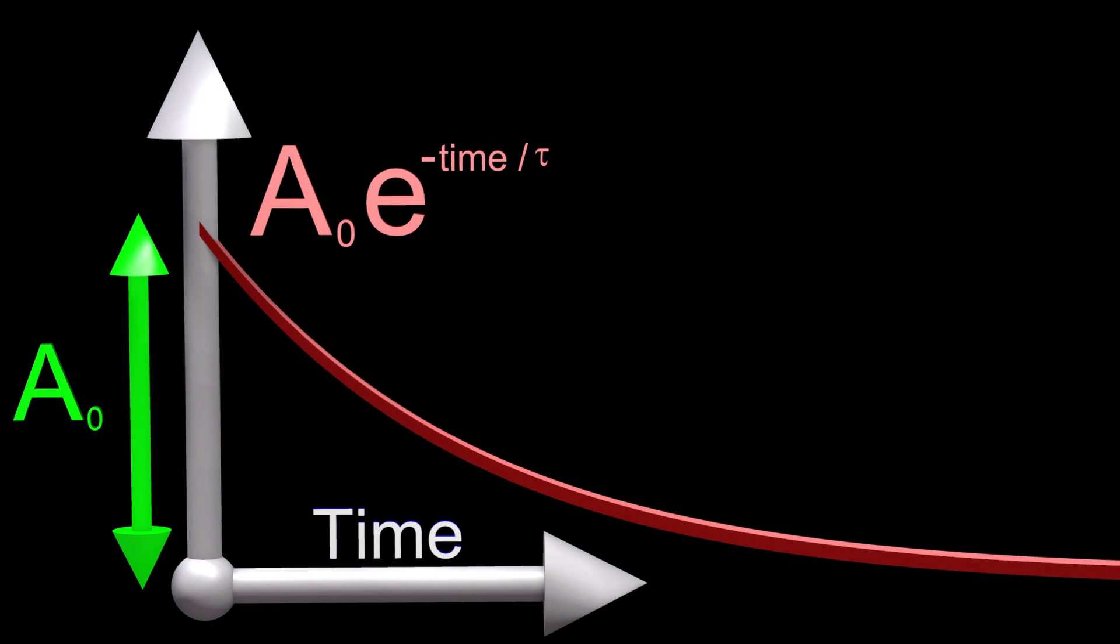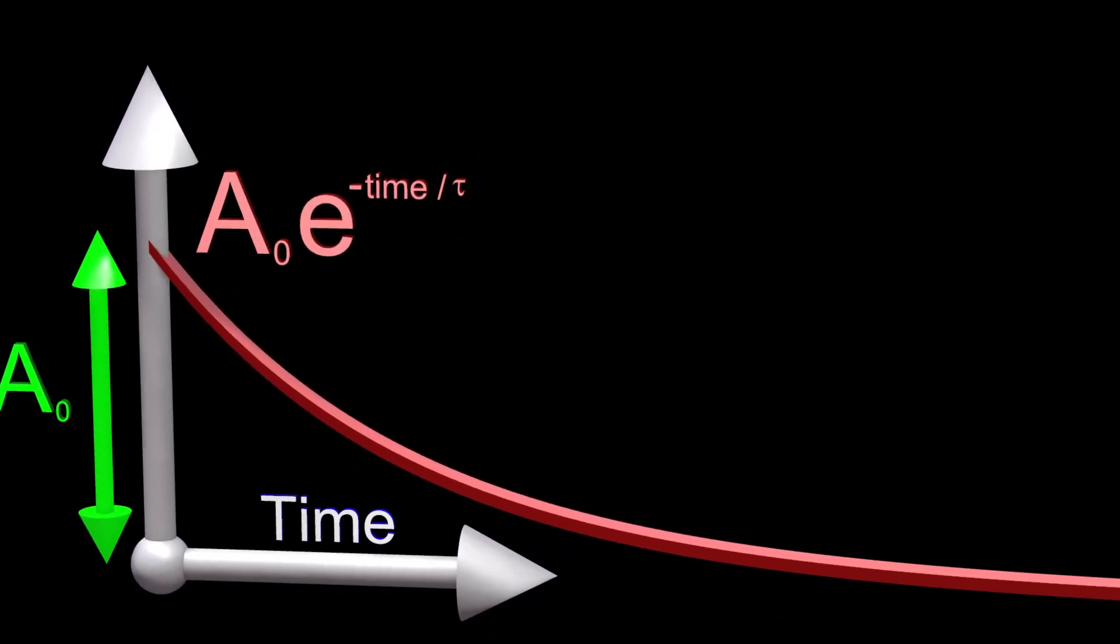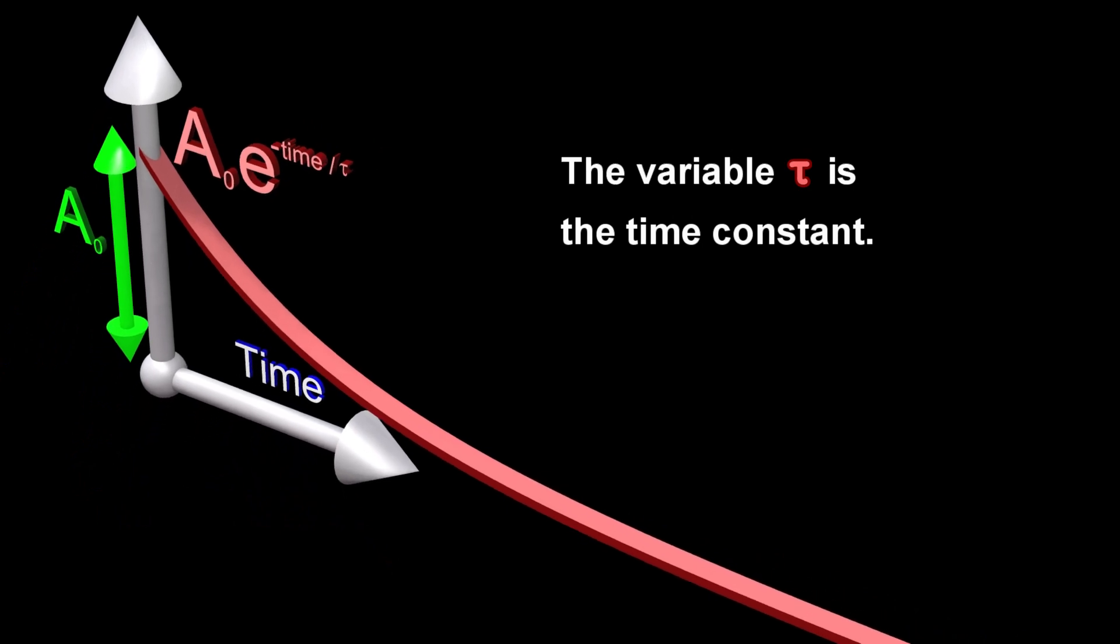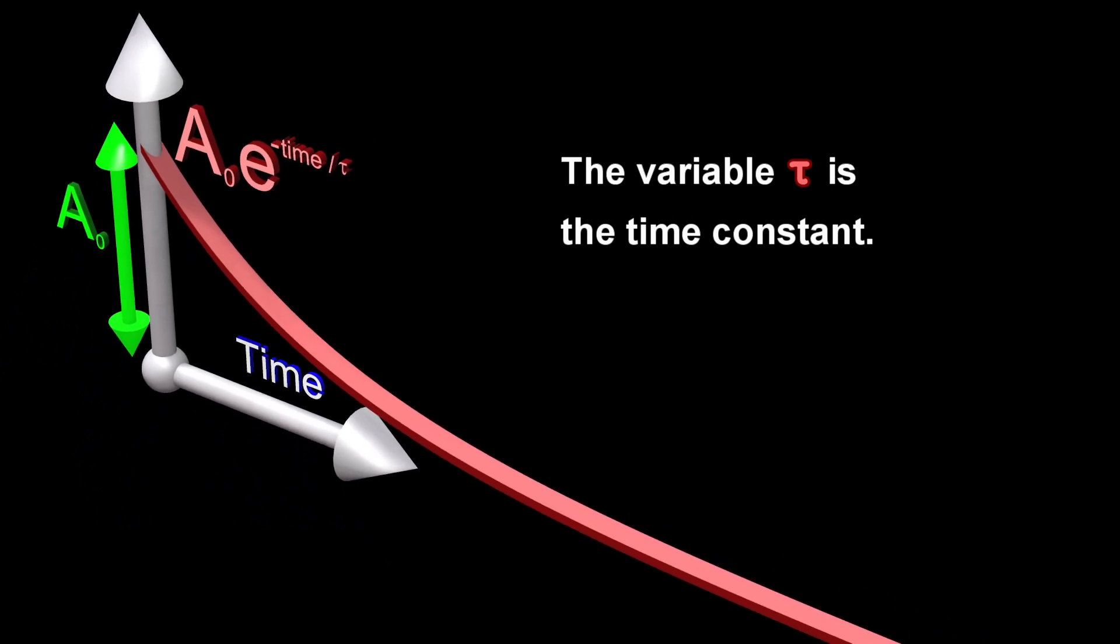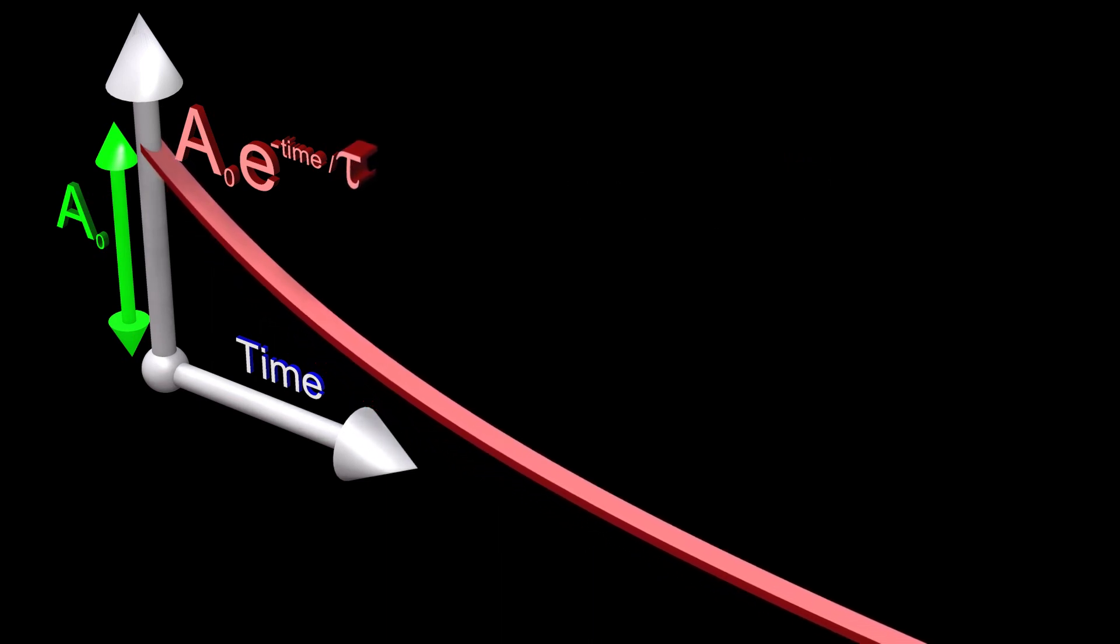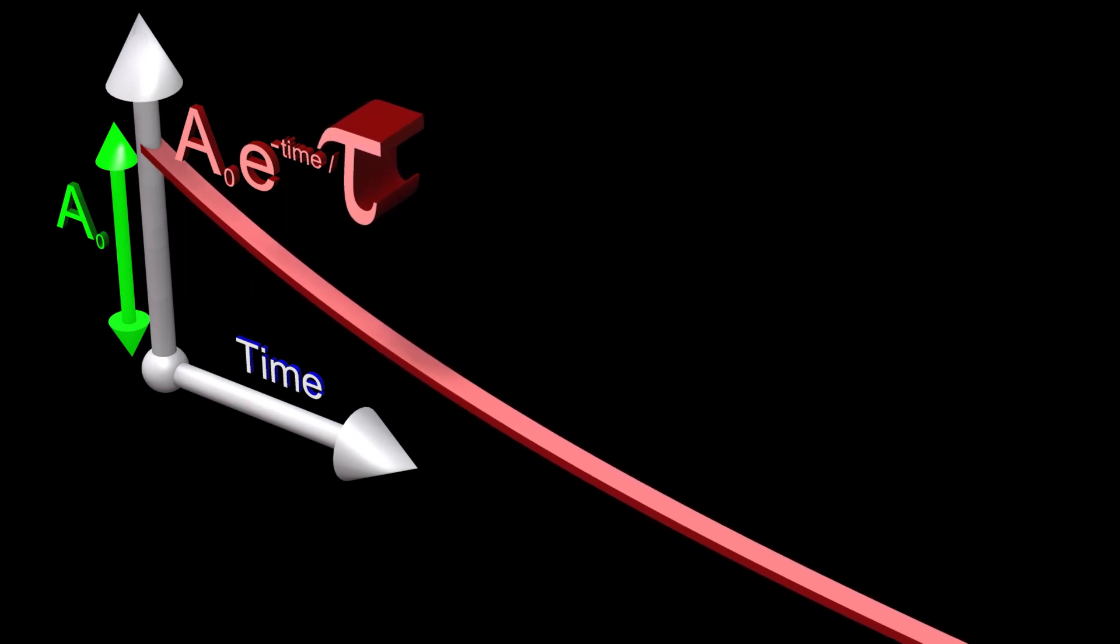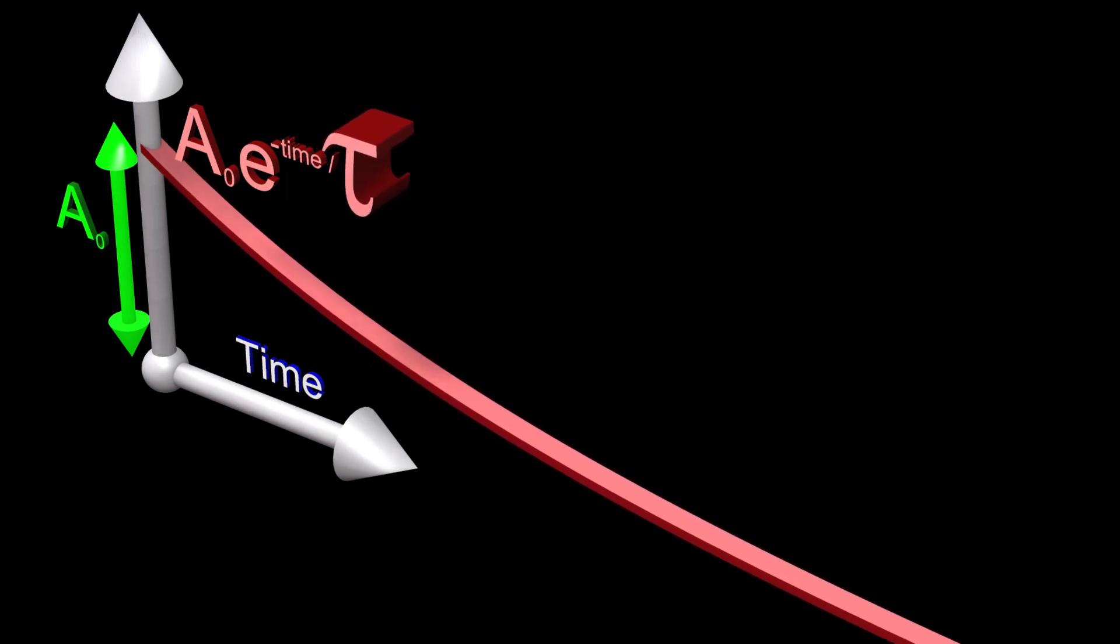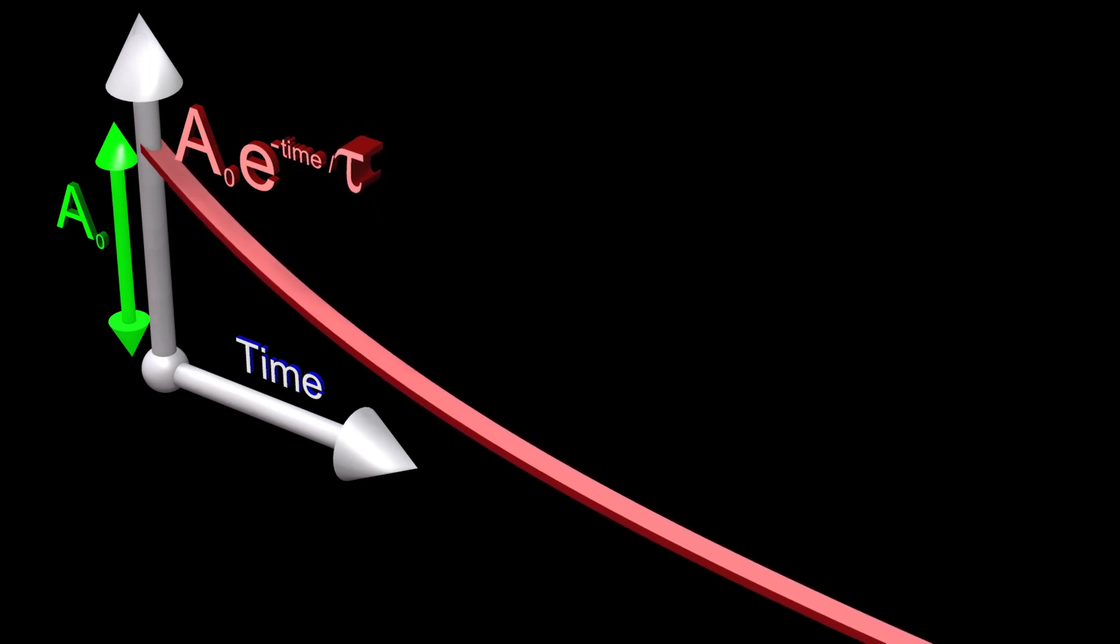Exponential decay is represented mathematically as follows. The variable TAU is the time constant. The larger the value of TAU, the slower the decay. The smaller the value of TAU, the faster the decay.